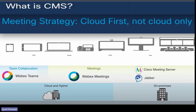Then you have Cisco Meeting Server, which is an on-premise solution. With CMS you can use Cisco Jabber, video endpoints, or other applications to join meetings. Since CMS is an on-premise solution, it is hosted in your environment — meaning you are in control of the infrastructure and security, which is really important for some organizations.